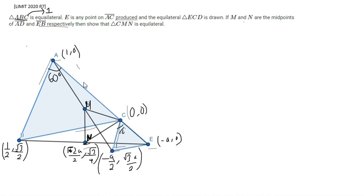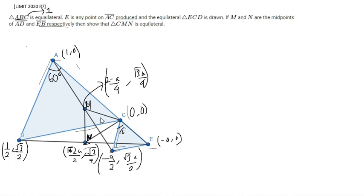M is the midpoint of AD, so its x-coordinate is (2 - a)/4, and the y-coordinate is going to be √3·a/4. Now you need to show that triangle CMN is equilateral — just calculate the lengths of the sides and this is done.